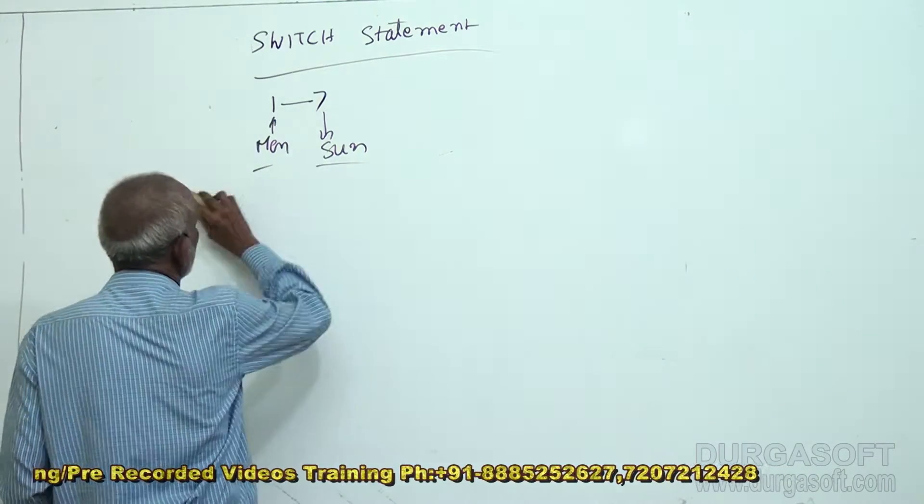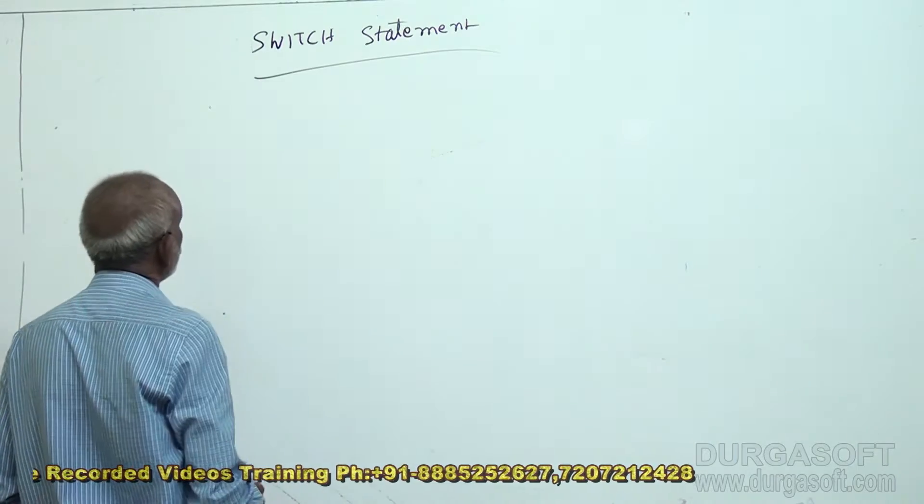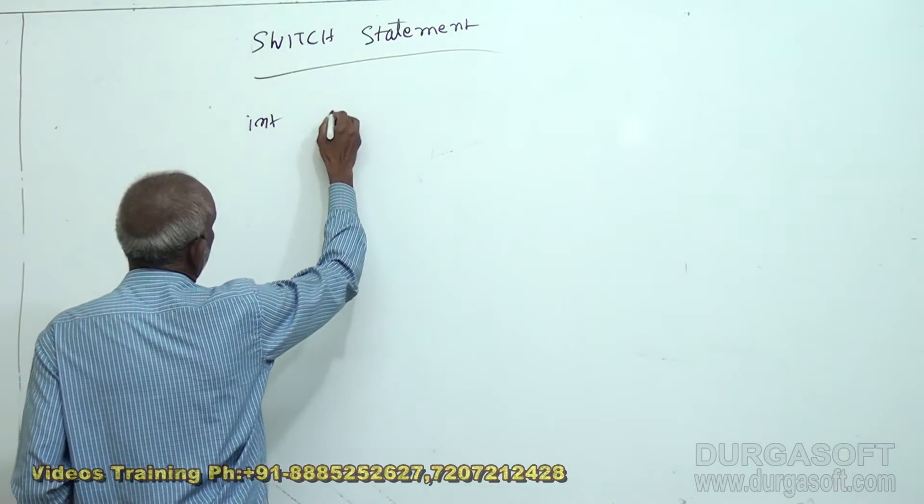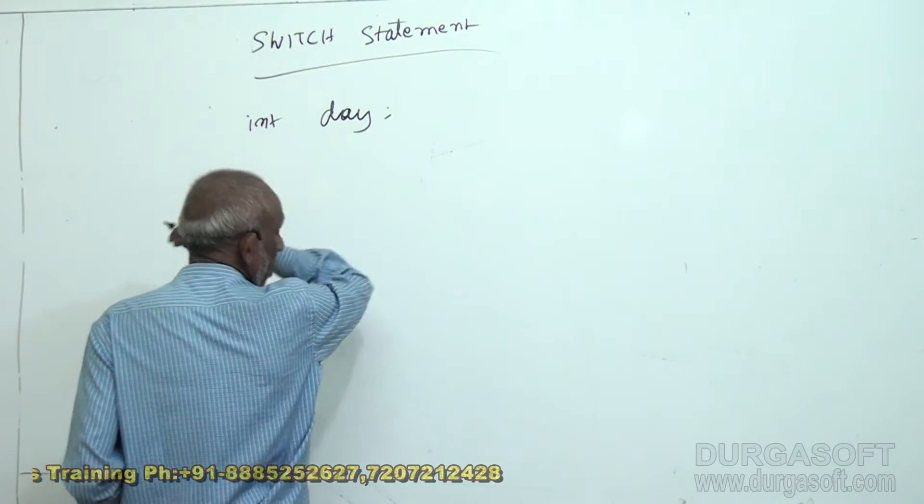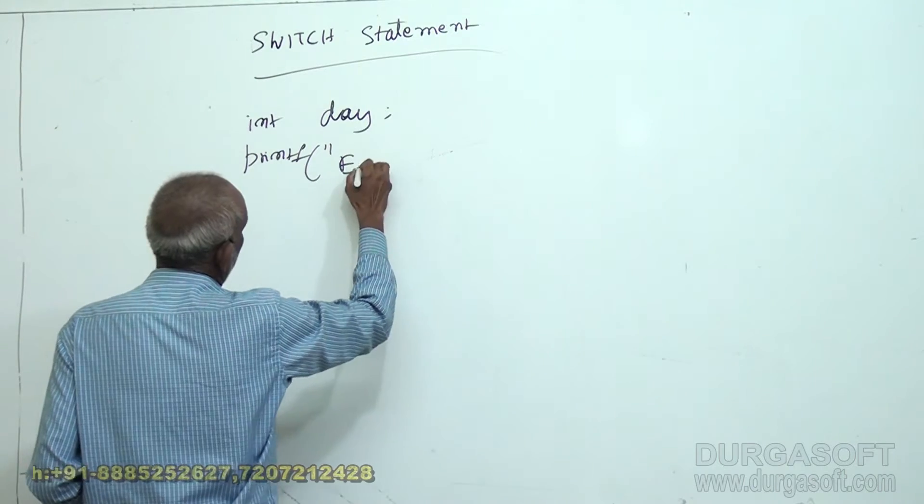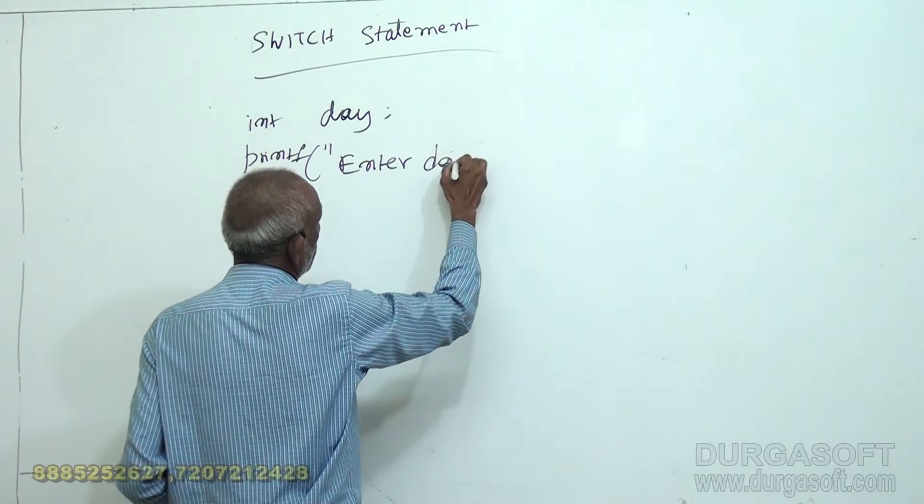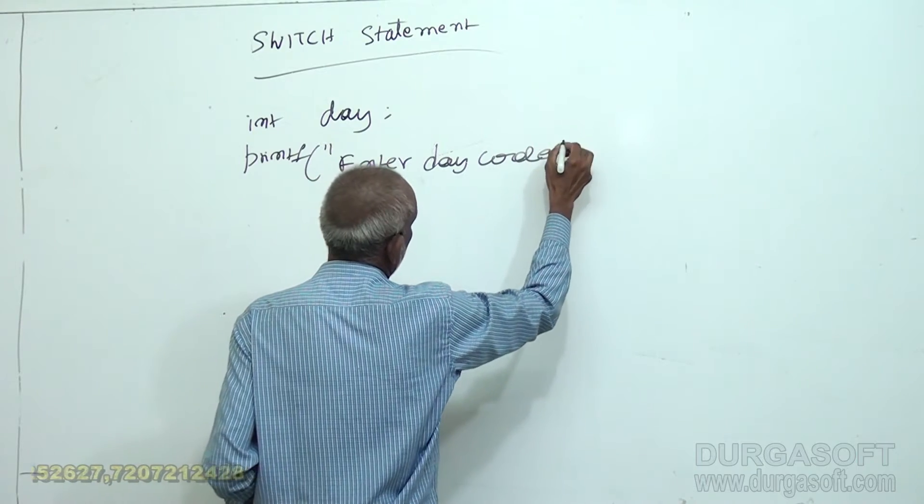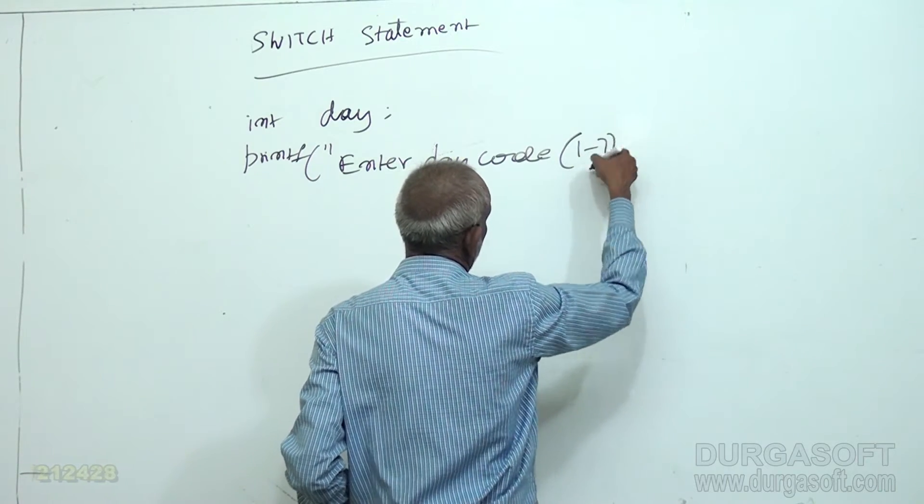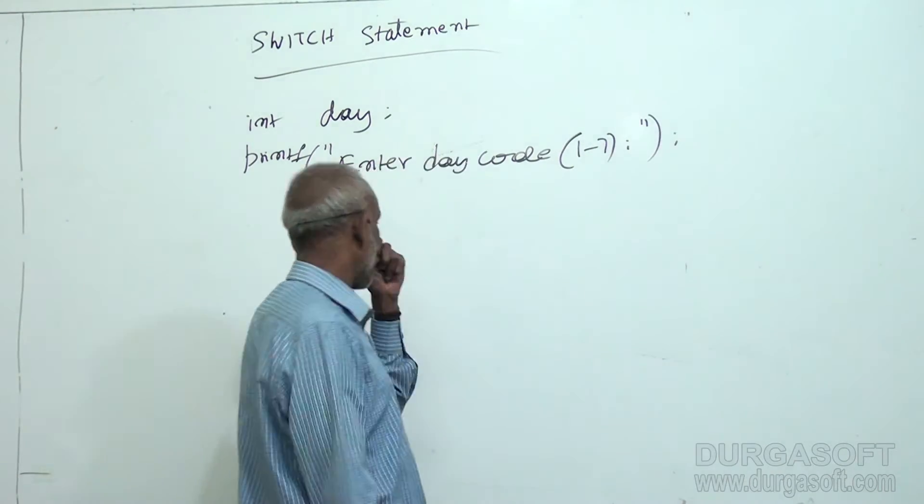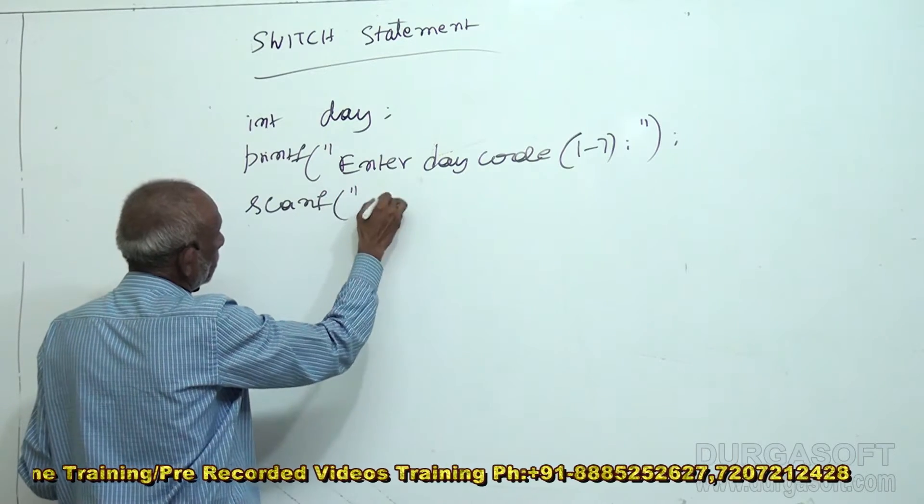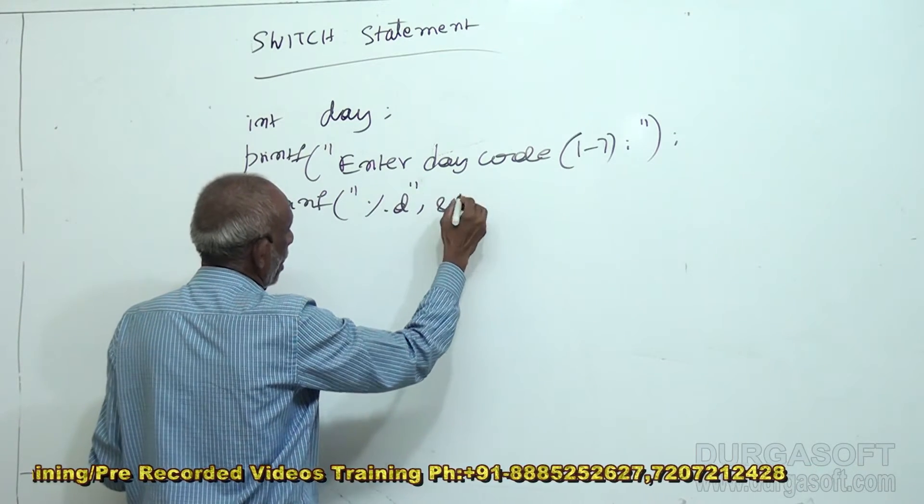Now, let us write the program using switch statement. So, again, day code, int day, a variable, ask user to enter day code, printf, enter day code. Bracket, you can say, 1 to 7. So, enter day code, 1 to 7. Get it and keep it in the day variable. %d ampersand day.